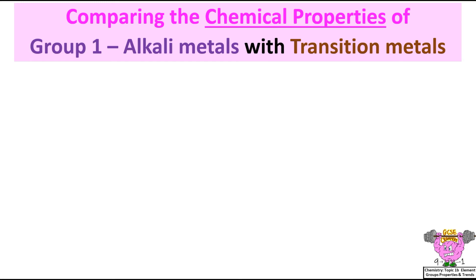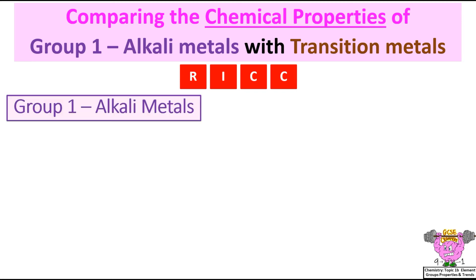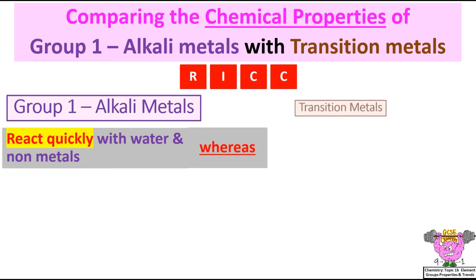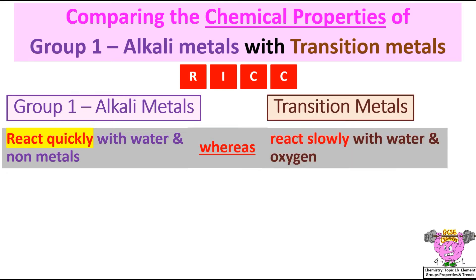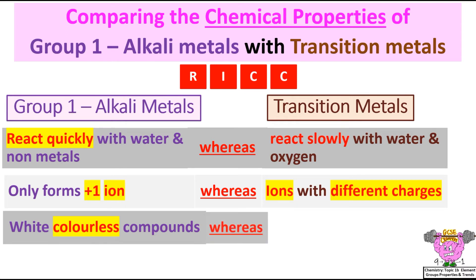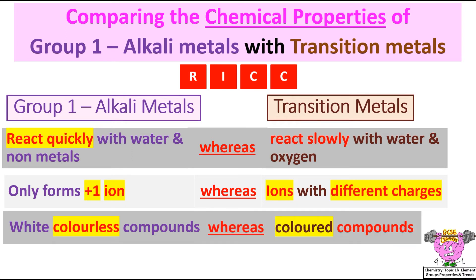Comparing the chemical properties using the acronym RICC: Group 1 alkali metals react quickly with water and non-metals, whereas transition metals react slowly with water and oxygen. Group 1 alkali metals only form plus one ion, whereas transition metals have ions with different charges. Group 1 alkali metals form white colourless compounds, whereas transition metals form coloured compounds. Group 1 alkali metals are not used as a catalyst, whereas transition metals are used as a catalyst.